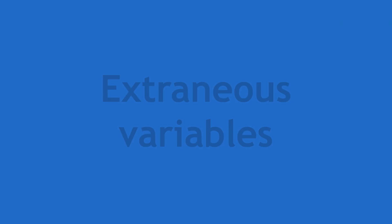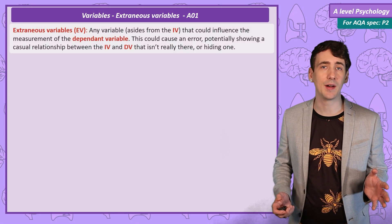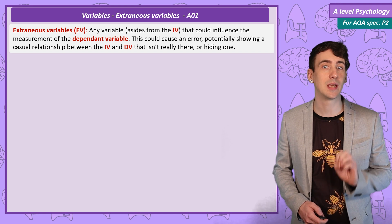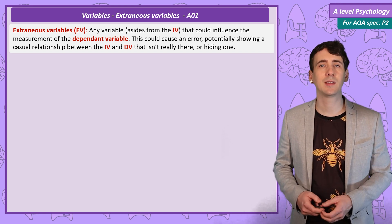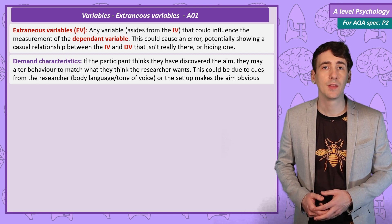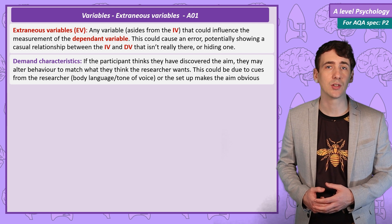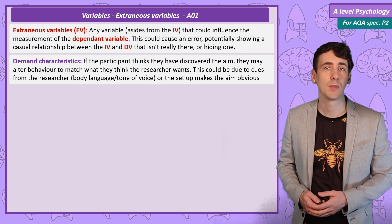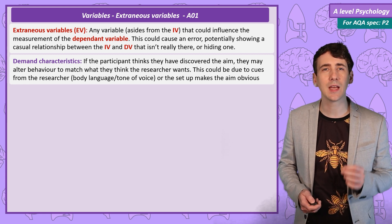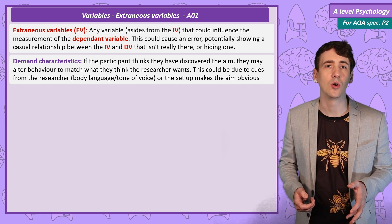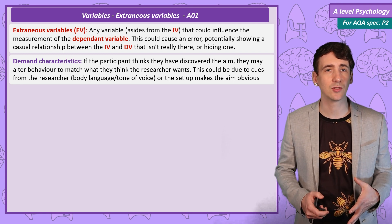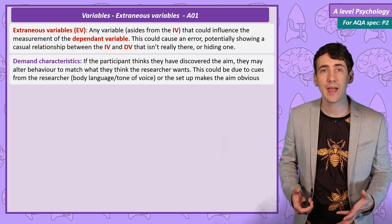Extraneous variables are the name we give to any other variable other than the independent variable that could influence our measurement of the dependent variable, and there are lots of potential extraneous variables. For example, demand characteristics — these are cues that the participant picks up on that suggest how they should behave. This could be verbal or non-verbal communication from the researcher, and we would call this experimenter effects. Or maybe it's the way the experiment is set up that gives away the aim. If the participant works out the aim, it's very tempting for them to act in a way they think is helpful or even unhelpful for the researcher. The problem is then that the researcher is measuring the effect of demand characteristics on the dependent variable, not the effect of the change in IV.